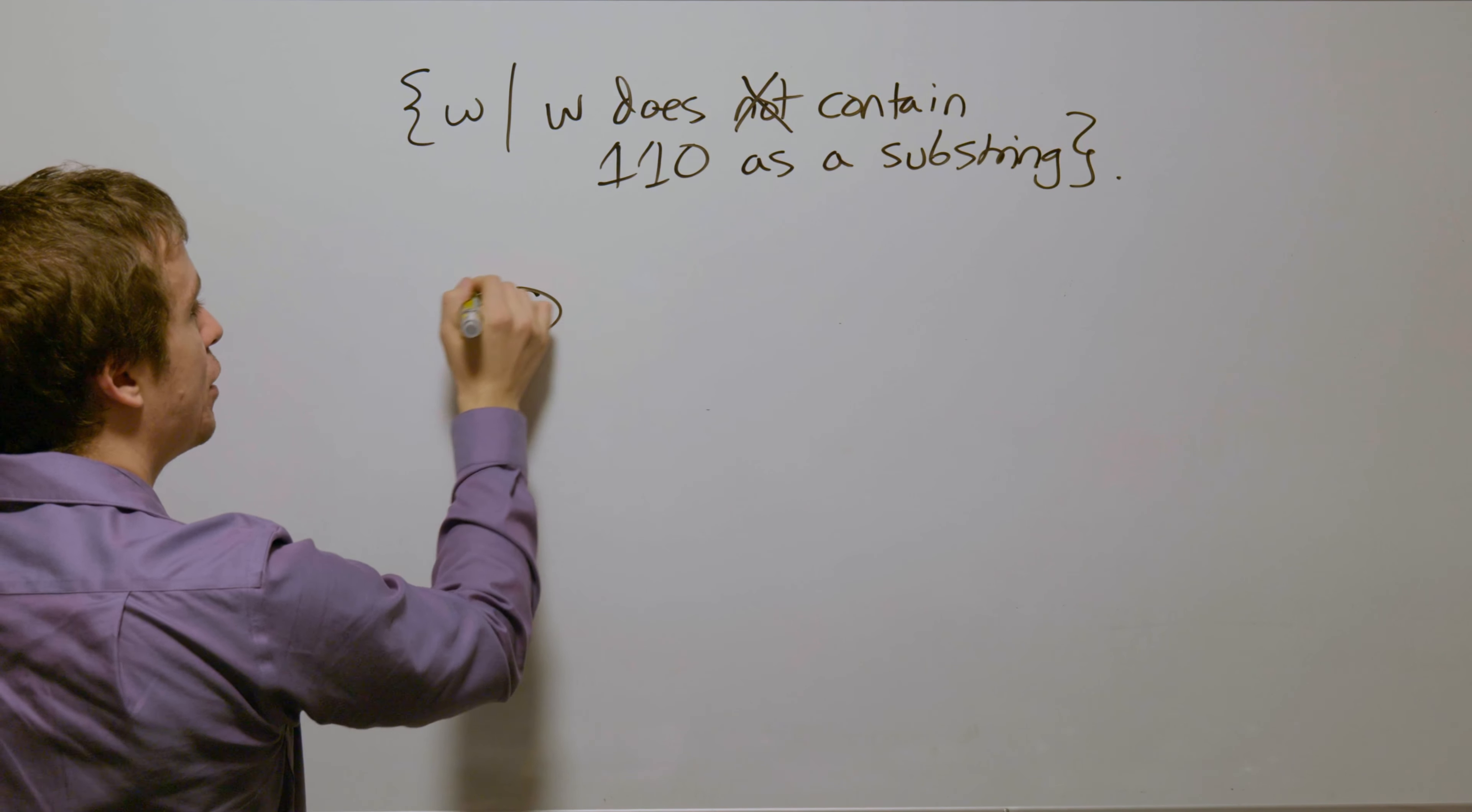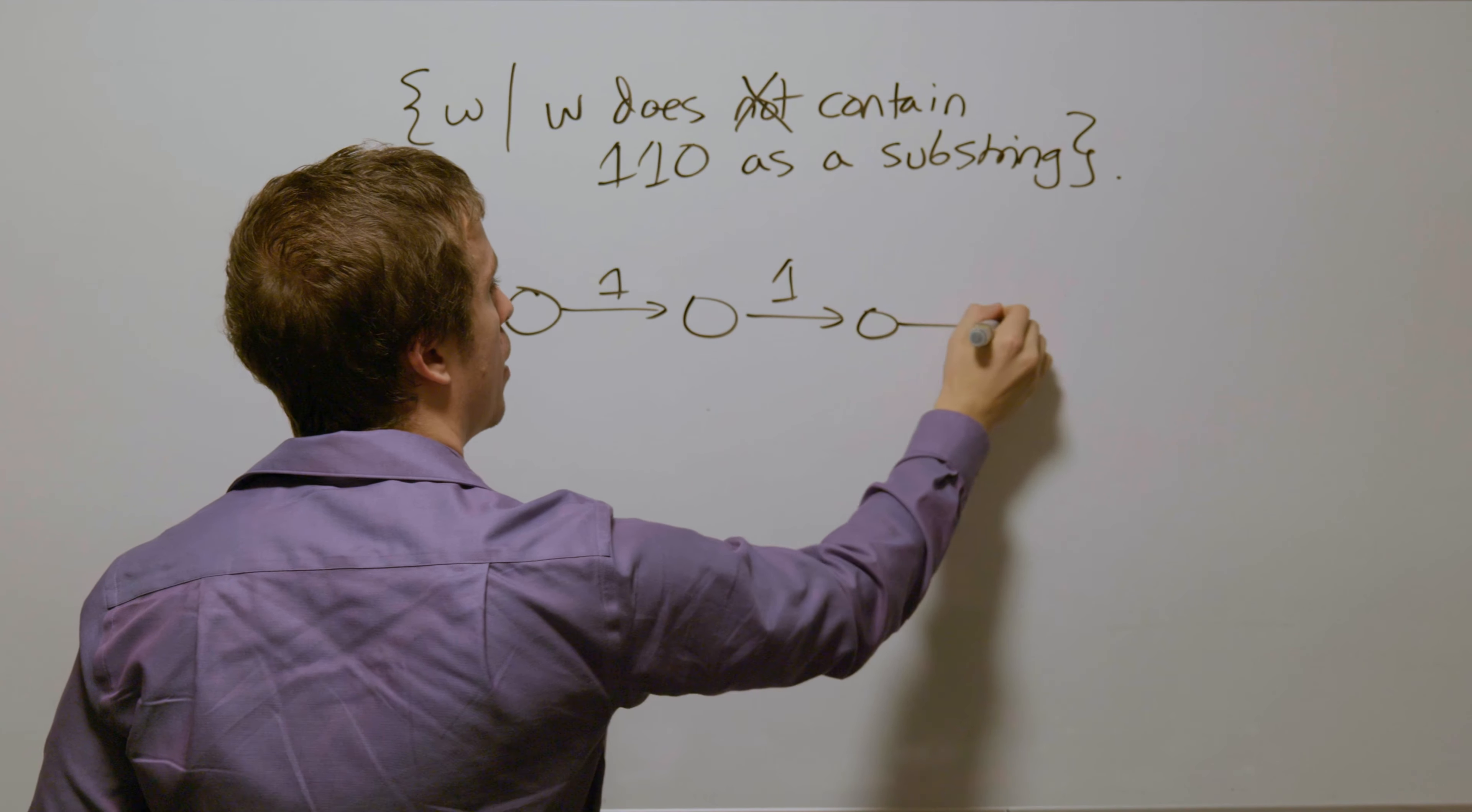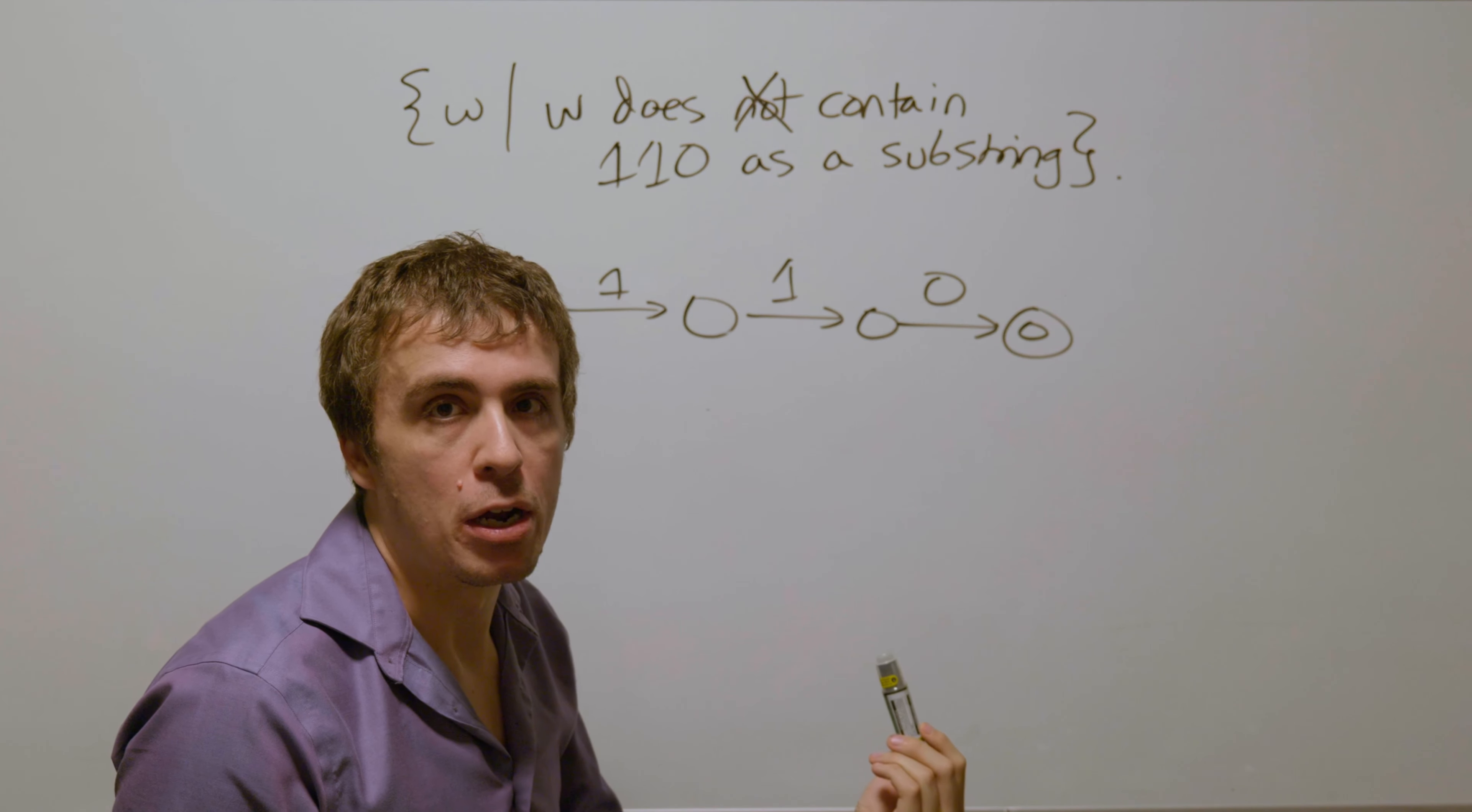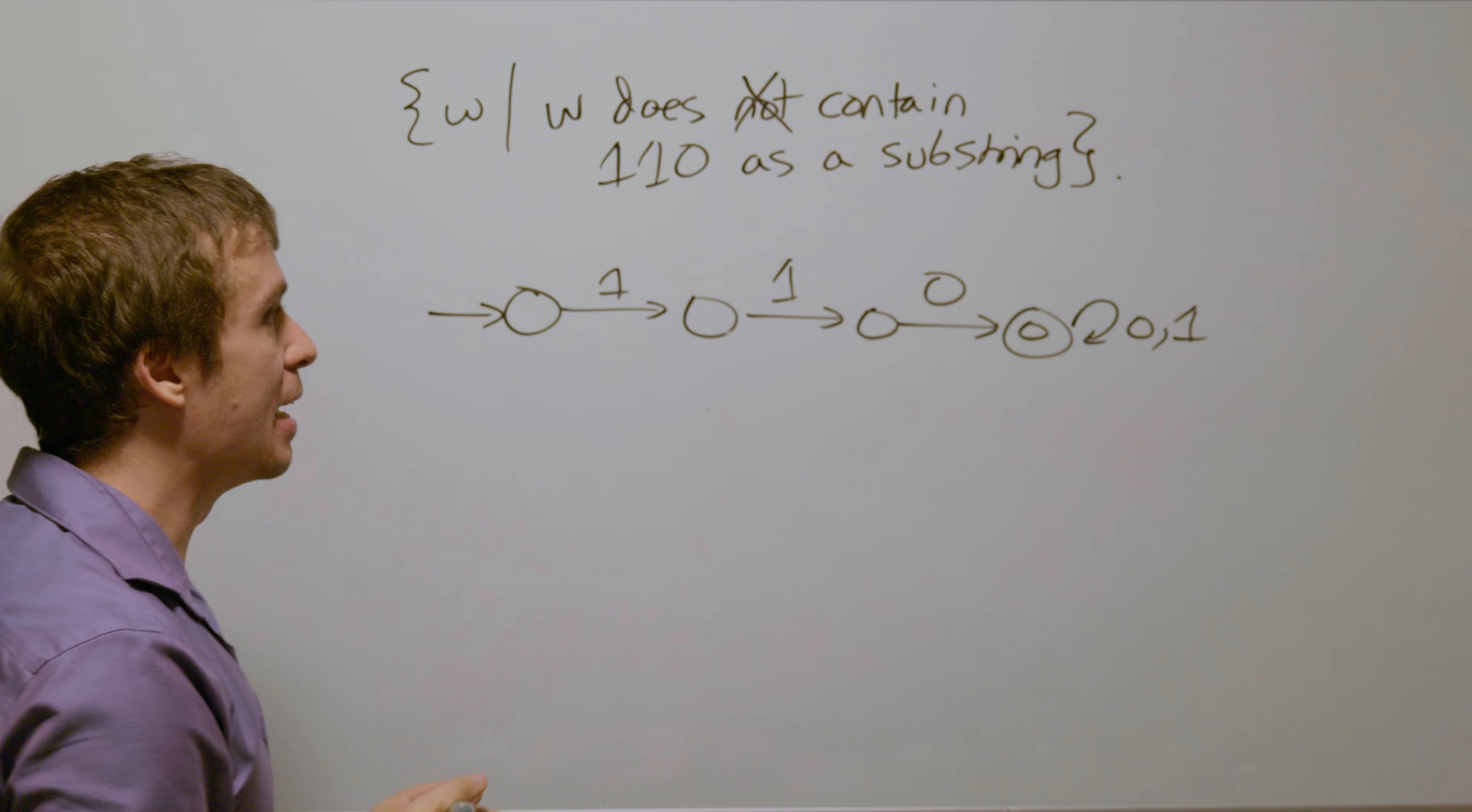So we need to have a start state and read 110, and so therefore we go to a final state. Well, if we read anything after this, then it's still going to have 110 as a substring. It's not going to change anything. And so therefore we need to have a 0,1 self-loop at the end.